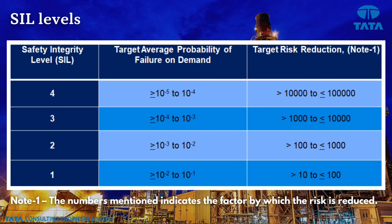As per IEC standards, there are four levels of SIL, from 1 to 4, where 1 is the lowest and 4 is the highest. When SIL 1 is assigned to a loop, the target level of risk reduction is 10 to 100 times; for SIL 2, it is 100 to 1000 times, and so on.